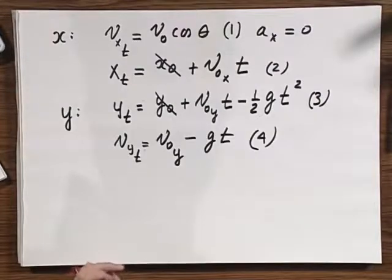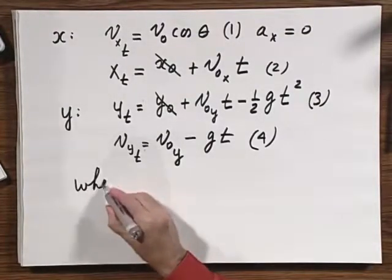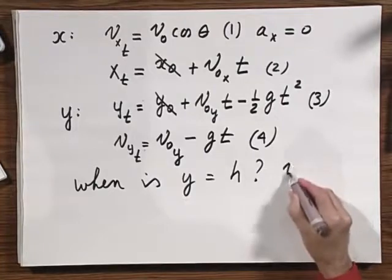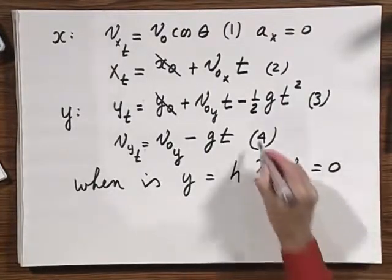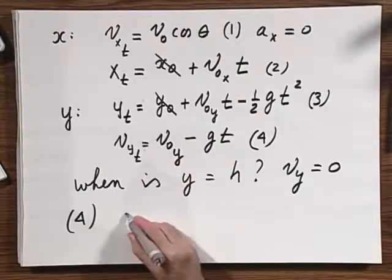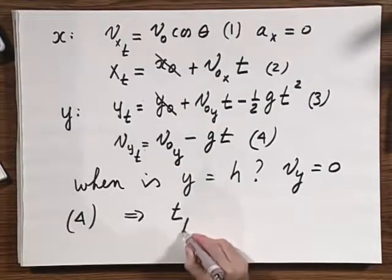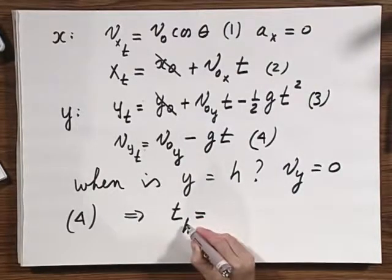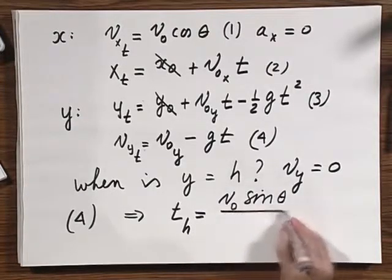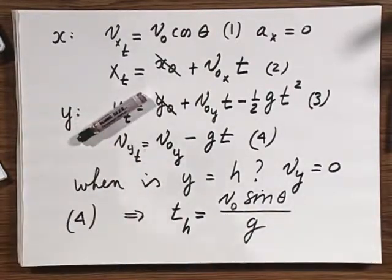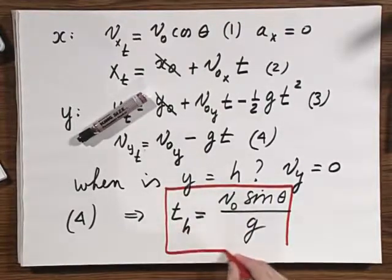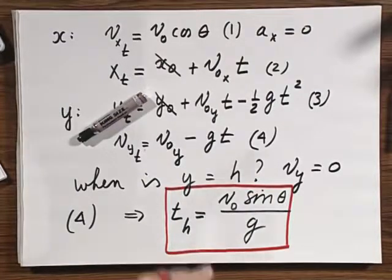So let's first ask the question, when is y equal h? In other words, when is v_y equals zero? So I go to equation number four, I substitute in here v_y equals zero, and I find immediately that the time that h is reached, which we have called t_h, equals v0 times the sine of theta divided by g. But that's the result that I will frame in red, if you can see colors, the time that it takes to reach the highest point.